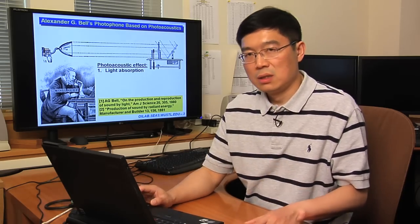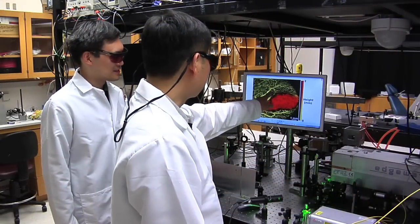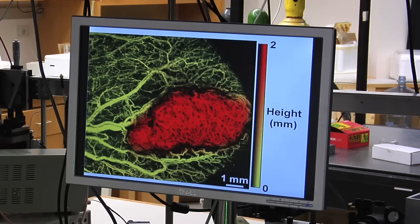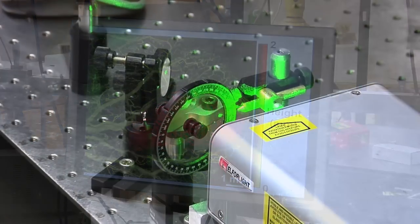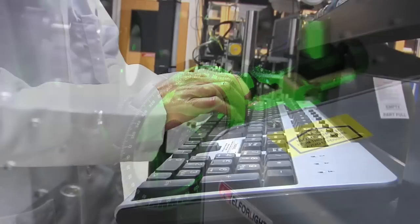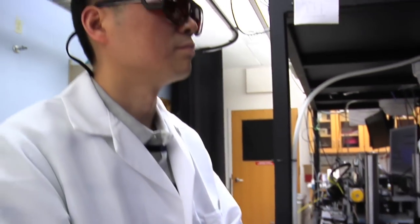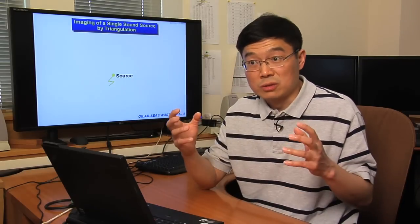Now Bell was interested in the audible frequency range. We're interested in the ultrasound frequency range so we can shorten the wavelength of the sound for better spatial resolution. We can define the structures better and see the tumors better. Photoacoustic tomography has a very simple analogy. The principle is extremely straightforward. It's like triangulation.